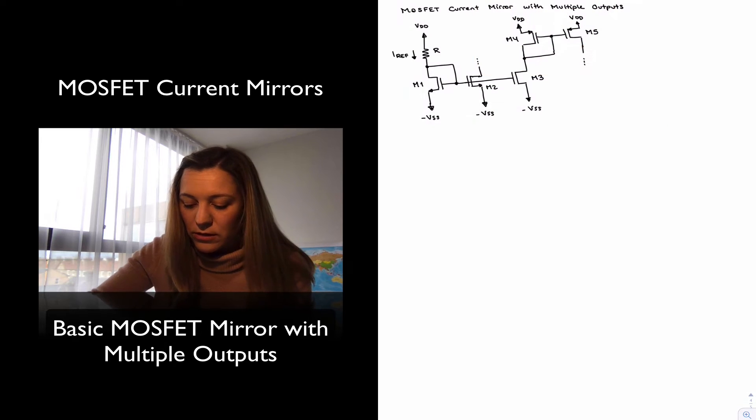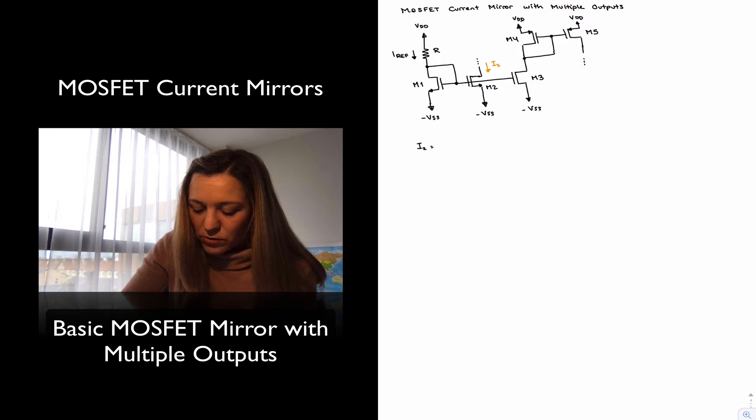That's no different from the basic current mirror we have seen so far, where my I2 current is basically equal to the reference current multiplied by the ratio of aspect ratios, the width over length of transistor 2 to the width over length of transistor 1.